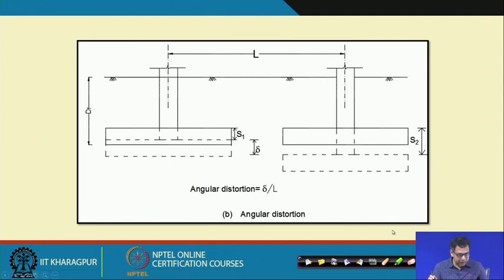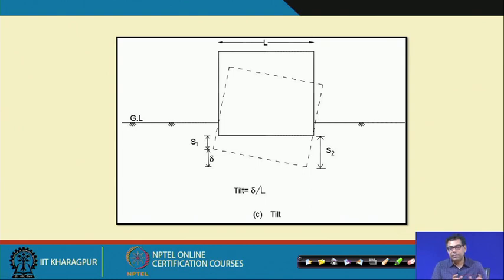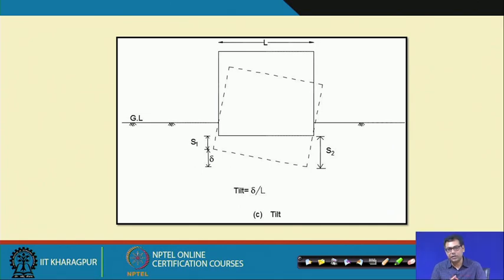Another type is tilting — when differential settlement is such that one side of the building deforms more than the other, causing the entire building to tilt. So the three types are: uniform settlement, differential settlement (angular distortion), and tilting. All must be controlled during foundation design.